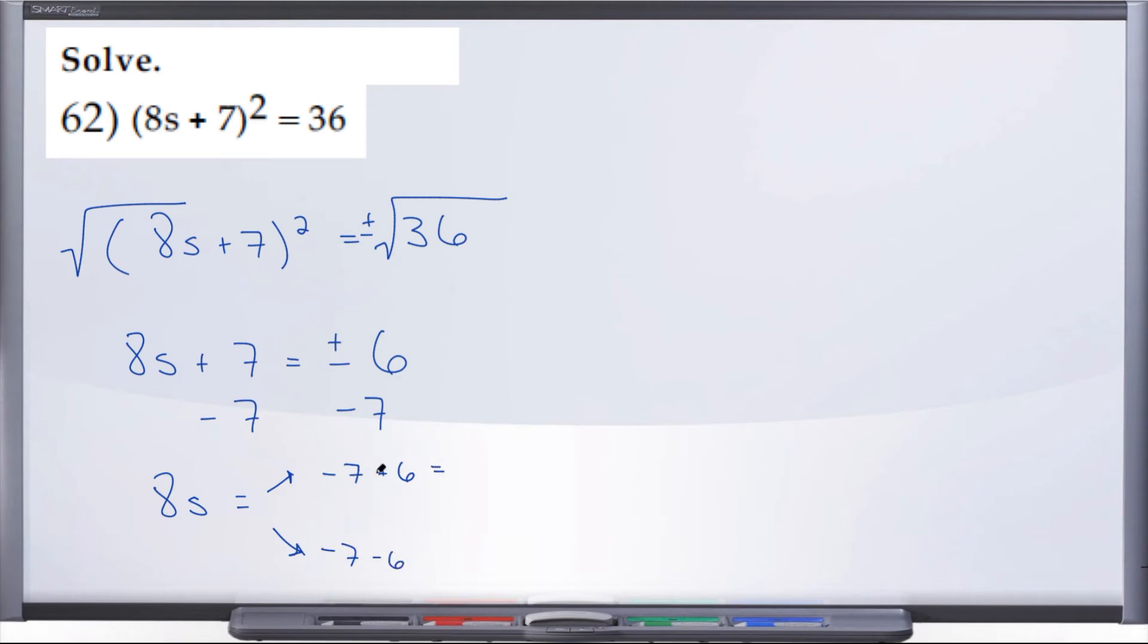Negative 7 plus 6 gives us negative 1. Negative 7 minus 6 gives us negative 13.